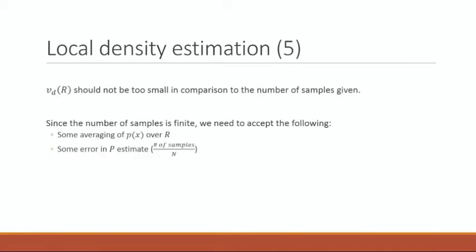We don't want the volume to be too small in comparison to the number of samples given. Since the number of samples is finite, there will be some averaging of P over R, and there will be some error in the P estimate.